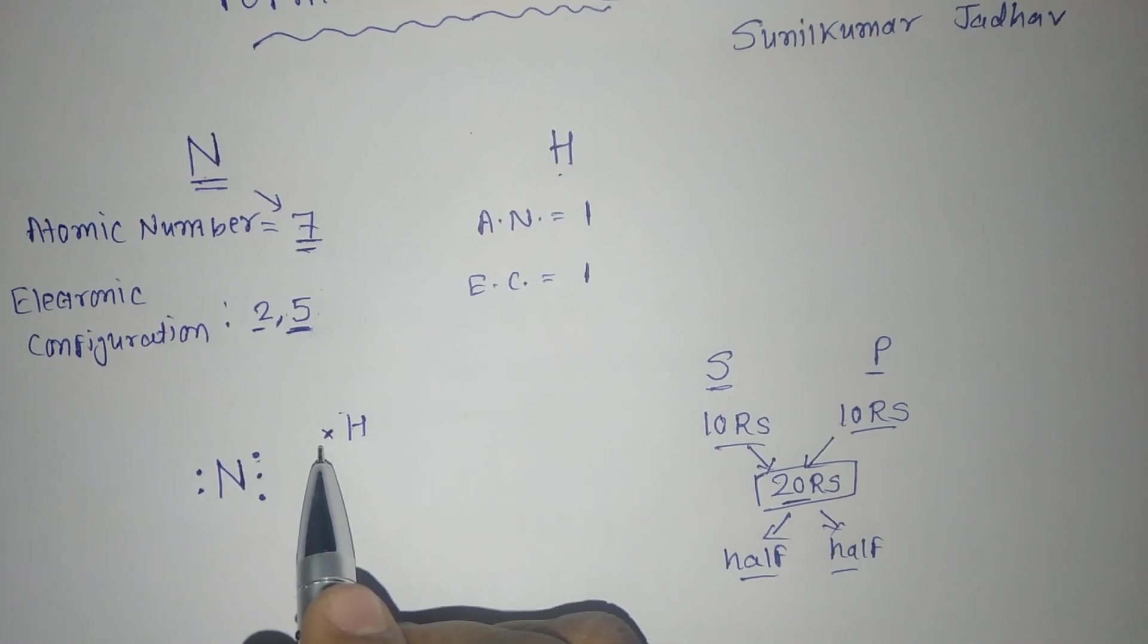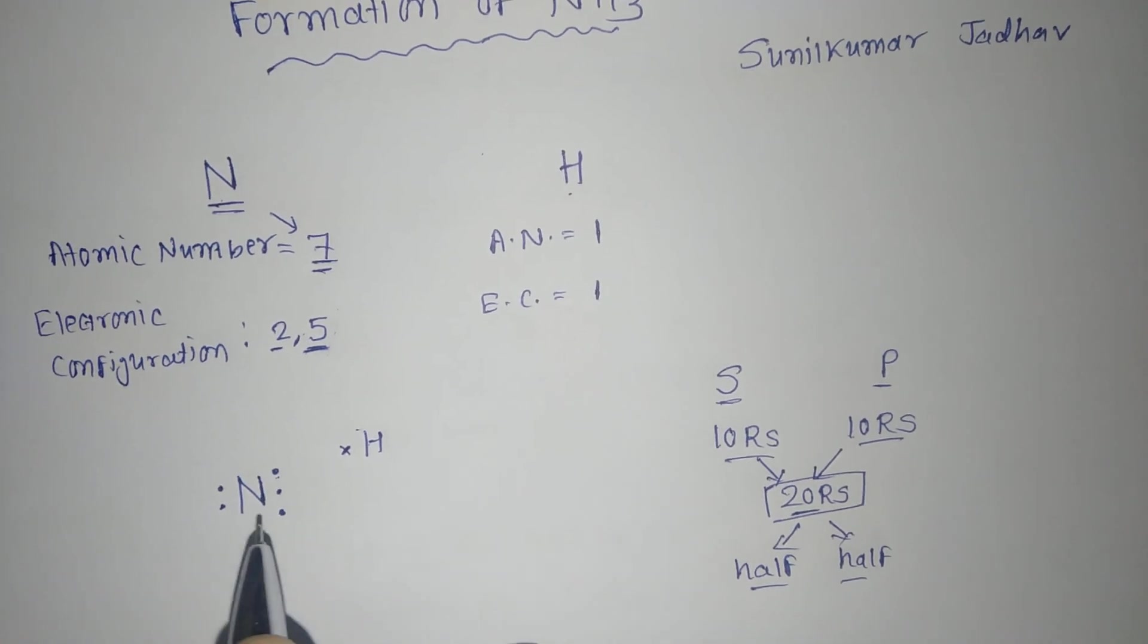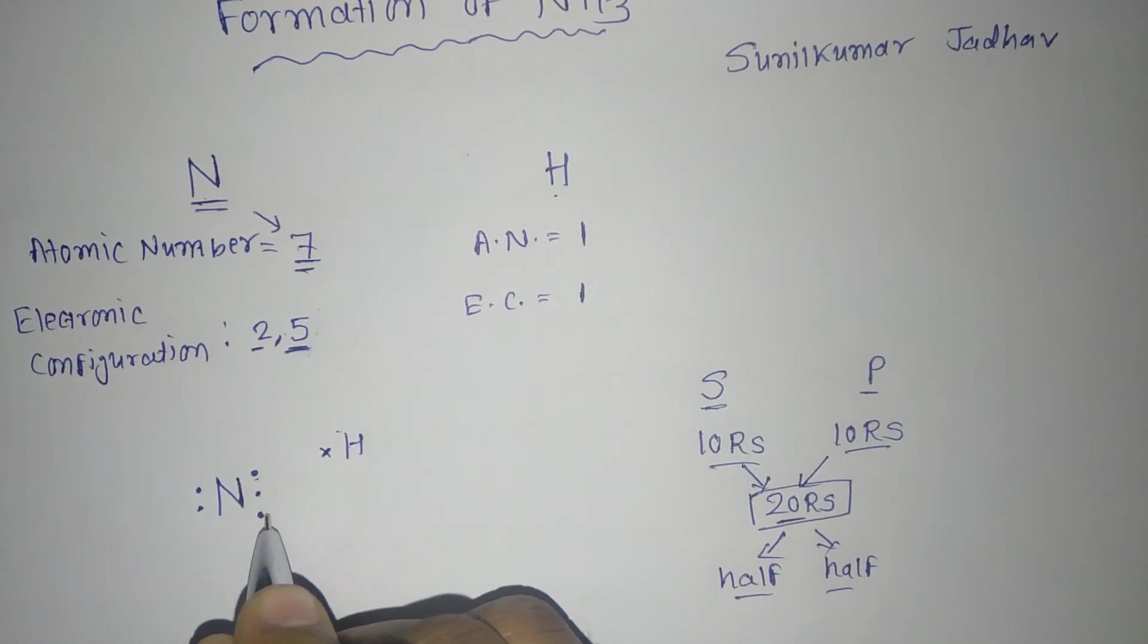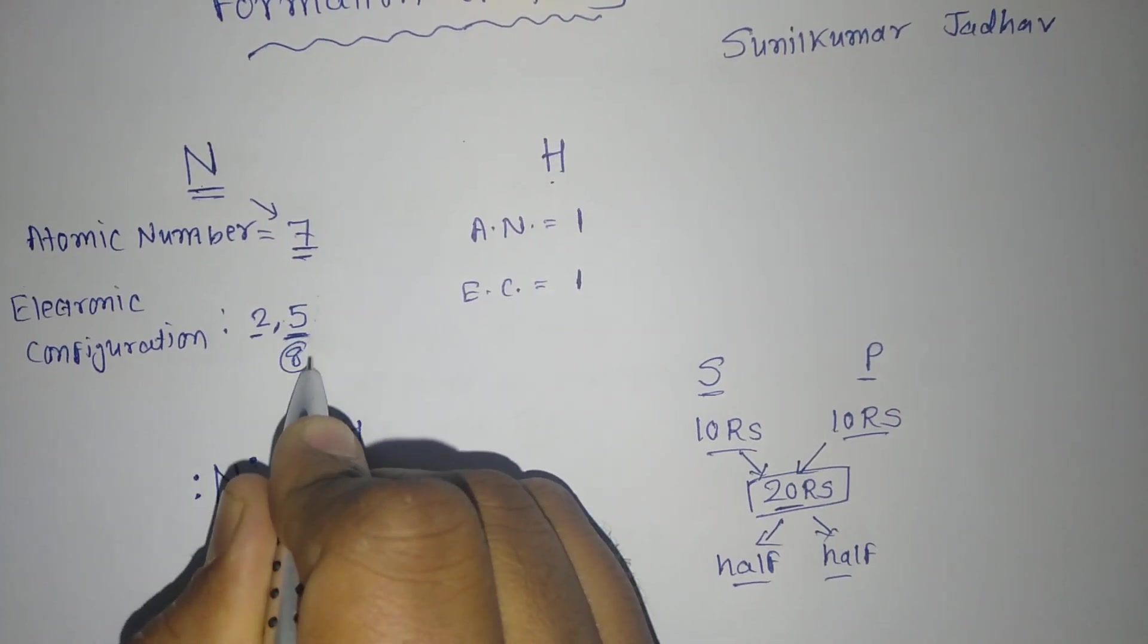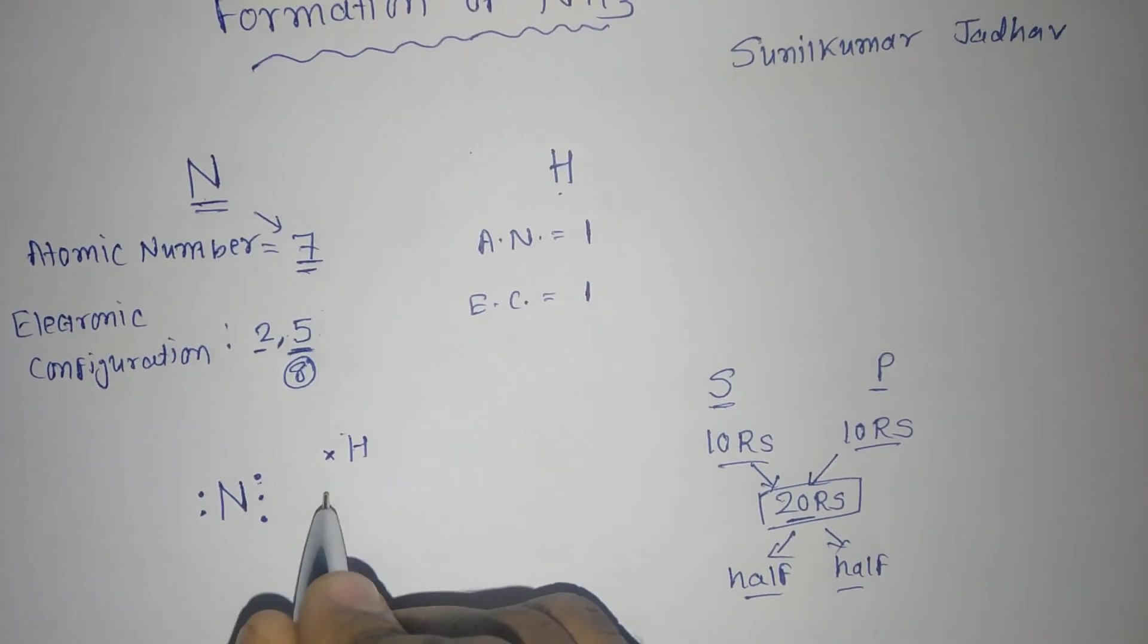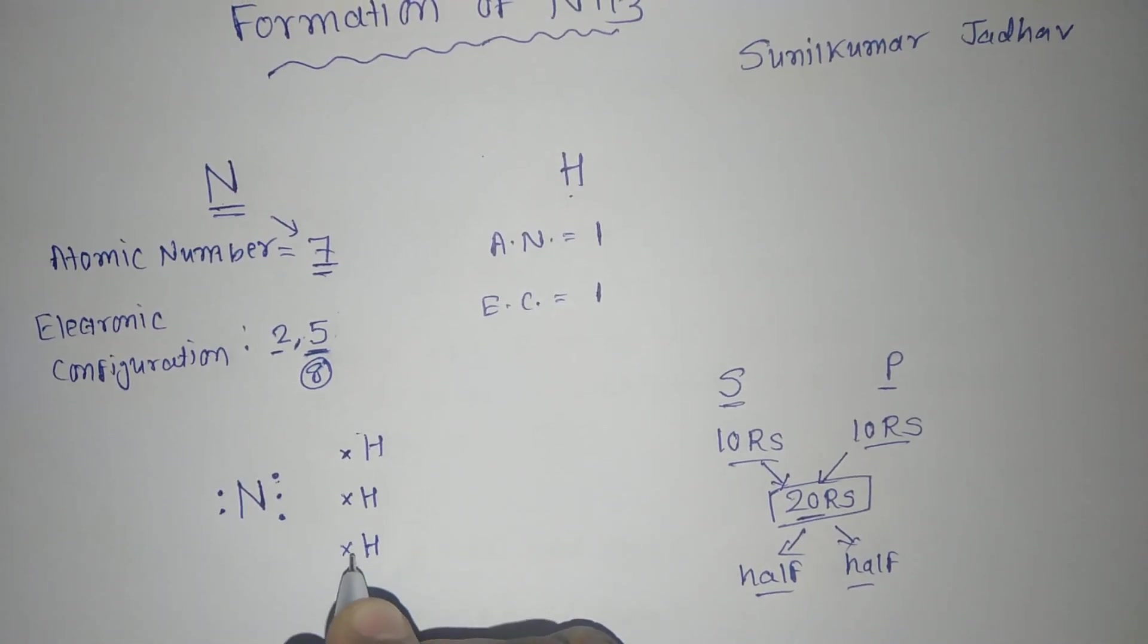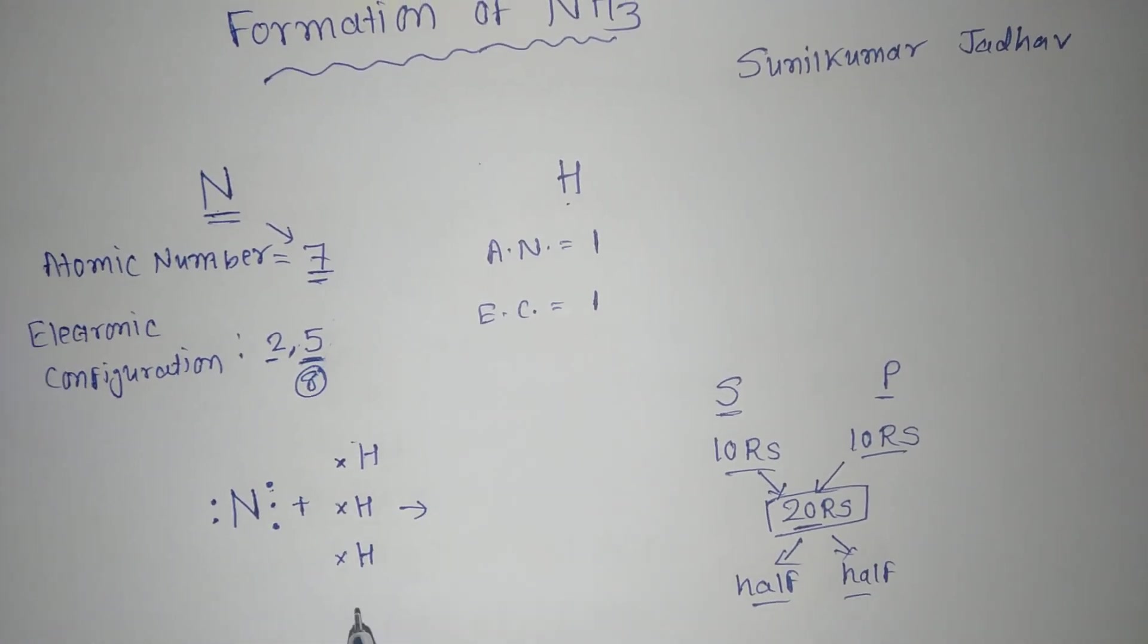Now suppose this hydrogen will give this 1 number of electron to the nitrogen—then its existence will not remain. So they will do the sharing of electron and will make the bond. As I said, this electron will not donate to the nitrogen or nitrogen will not take the electron from the hydrogen, but they will share the electron with each other. That is nitrogen hydrogen 1, 2. This 1, 2 and 3.